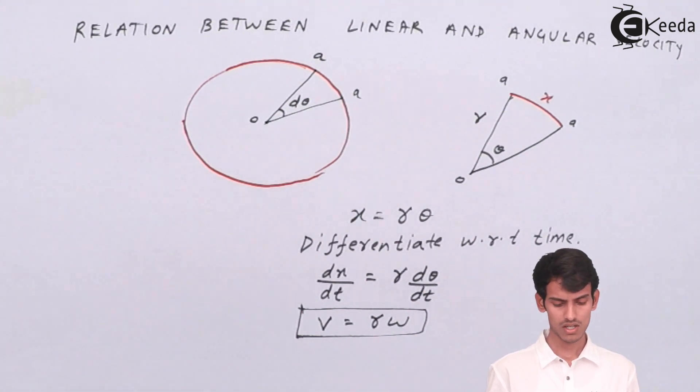It's a very important relation that is asked in exams. Also you need to know this equation because you will be using it in all the numericals that we will be solving ahead. So v is equal to r times omega is the relation between linear and angular velocity.